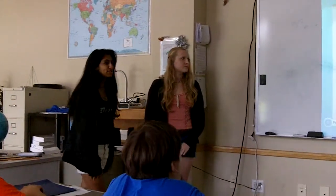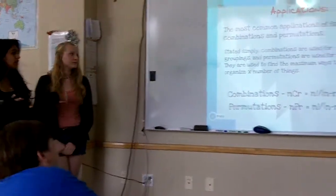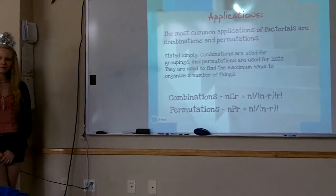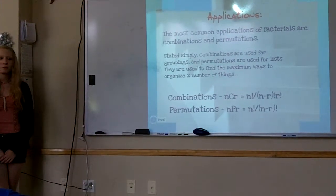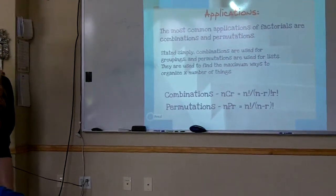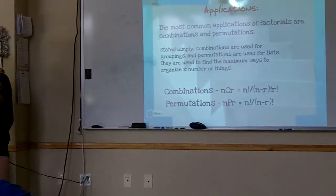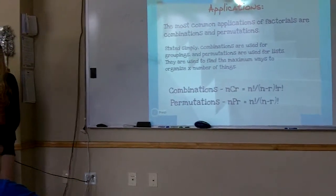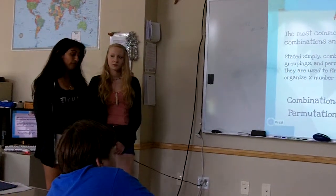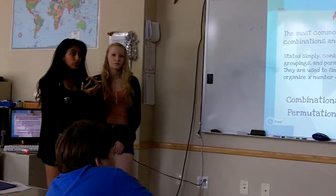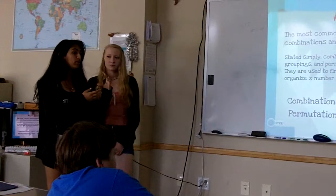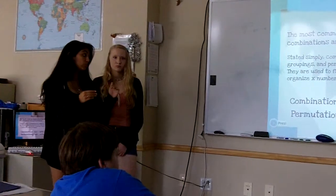So what are permutations and combinations? Factorials have a lot of common-day applications, often including permutations and combinations. These are ways to organize a certain amount of things. Combinations are used for groupings and permutations are used for lists, because with combinations order doesn't matter. You're finding how many ways you can group a certain amount of objects out of a larger number. With permutations, you're finding how many ways you can group it and organize it within those groups.